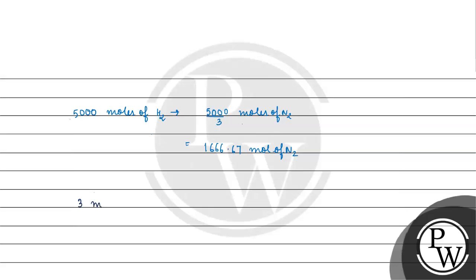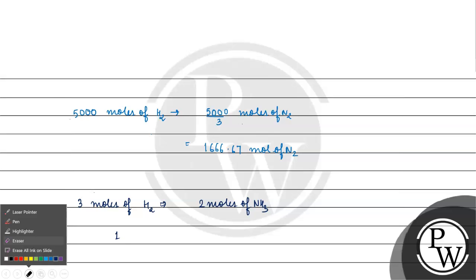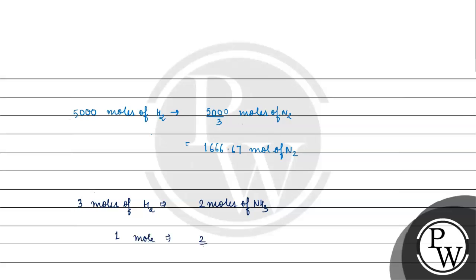Jab hamare paas three moles of hydrogen tha, toh hamare paas ammonia kitna ban raha tha? Two moles of ammonia. Agar ek mole of hydrogen hoga, toh two by three moles of ammonia banenge. Aur agar hamare paas five thousand moles of hydrogen hain, toh five thousand into two by three moles of ammonia. Toh kitne moles of ammonia ban jayenge? Three thousand three hundred thirty-three point three moles of ammonia will be formed.